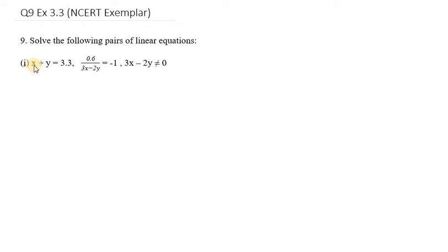Hello everyone, let's start with question number 9. In this we are given the first part: x plus y equals 3.3, and the second equation is 0.6 over (3x minus 2y) equals minus 1.